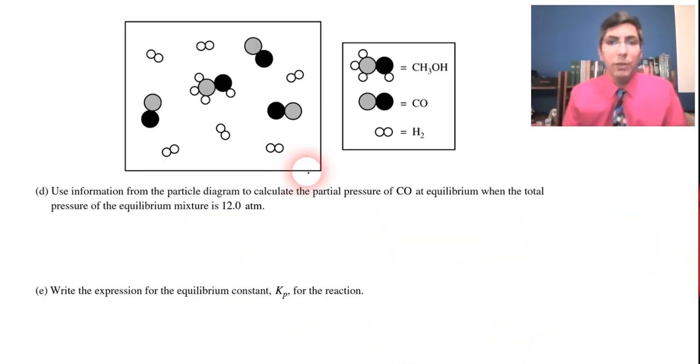Let's go on to part D. This is an interesting question about equilibrium. It says use information from this particle diagram to calculate the partial pressure of carbon monoxide at equilibrium, when the total pressure of the equilibrium mixture is 12 atm. Now the problem tells us that this is the equilibrium mixture. This is the ratio of particles and compounds and substances at equilibrium. Well, just counting these up, there seems to be six of these H2 molecules. There are three of these carbon monoxide molecules. And there's one of this methanol molecule right there.